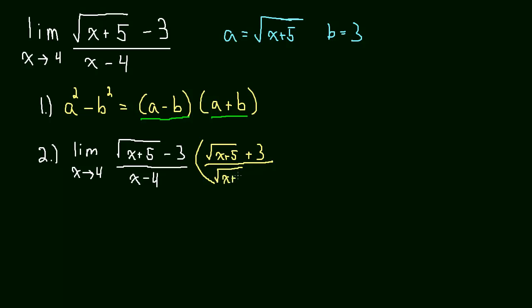So we have to multiply by this over itself. So square root of x plus 5, plus 3. Now everything is nice and neat and mathematically legitimate because we're just multiplying by 1.